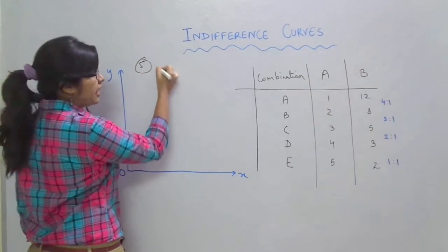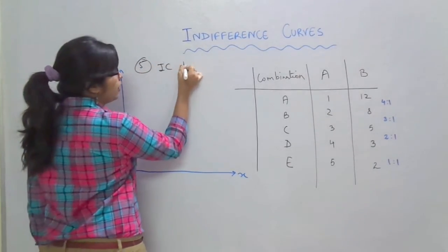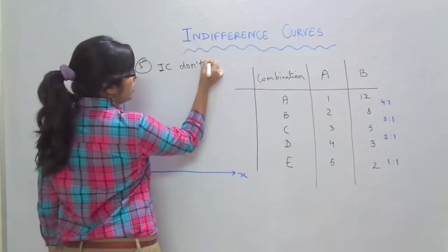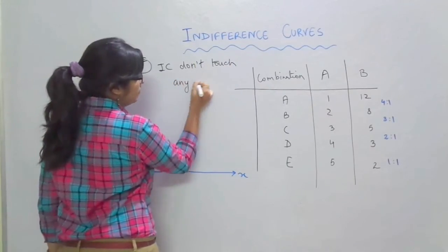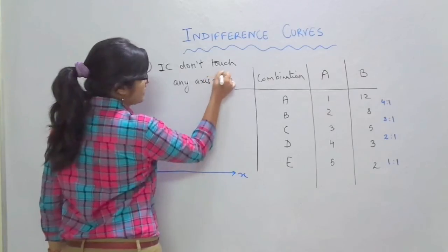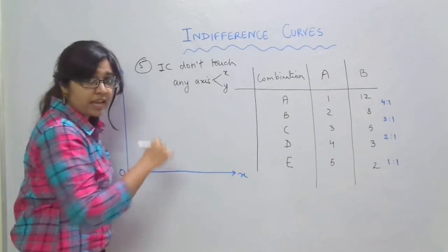The fifth property says that indifference curves do not touch any axis. Any axis means that either y or x axis.